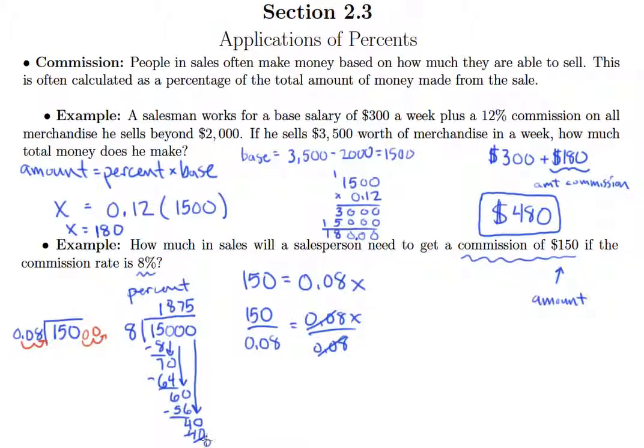I'm out of room, but I also get to stop. So what we end up here with is 1,875 is equal to X. So that means the salesperson needs to sell $1,875 in merchandise in order to get that $150 in commission that the salesperson wants.